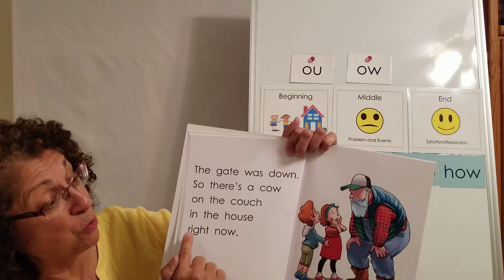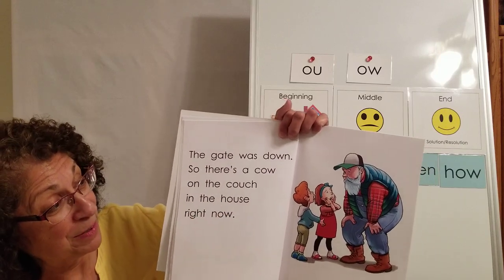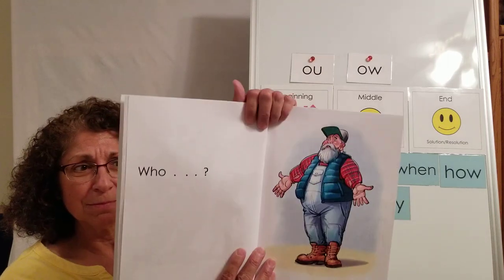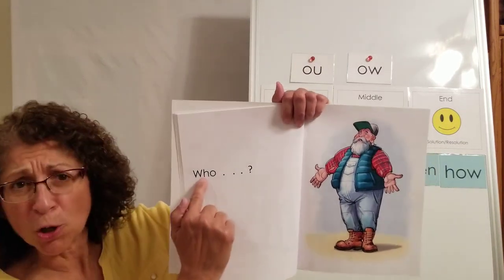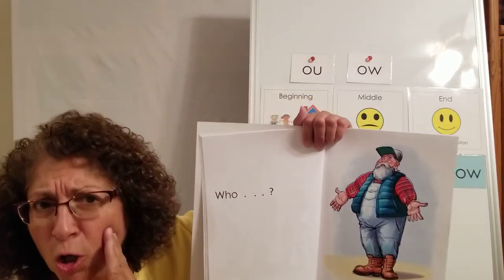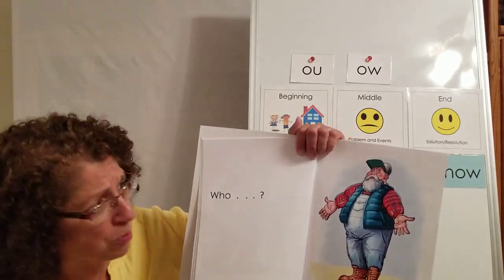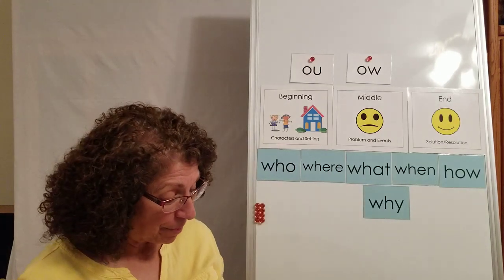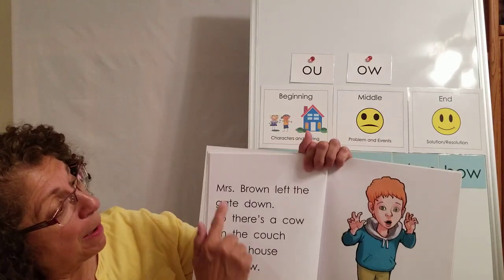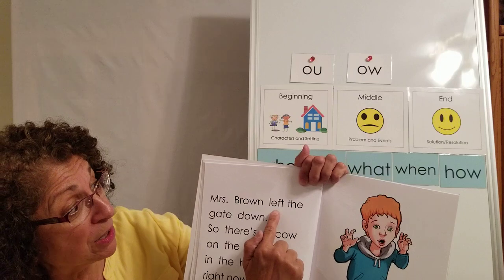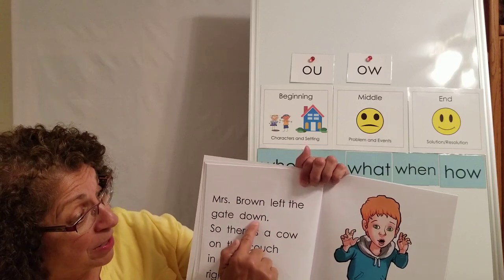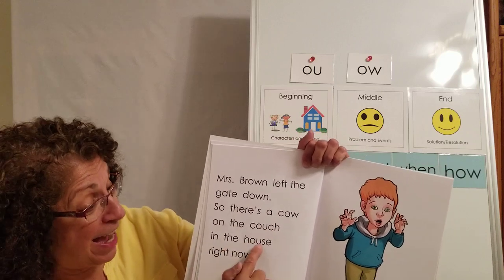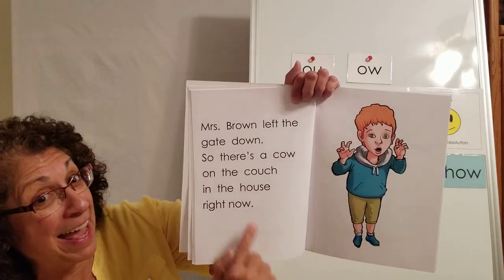'There's a cow on the couch in the house right now!' When? Right now! How? The gate was down! Mrs. Brown left the gate down, so there's a cow on the couch in the house right now.